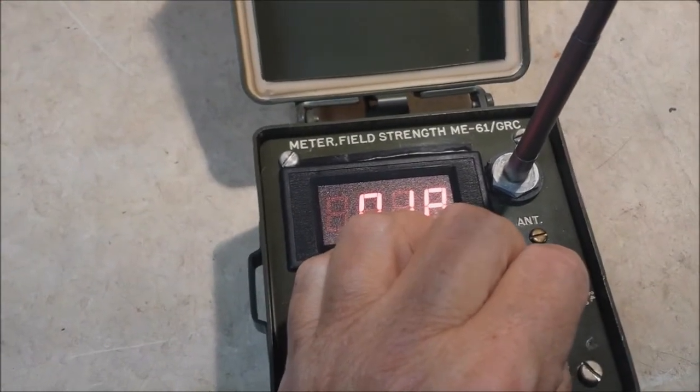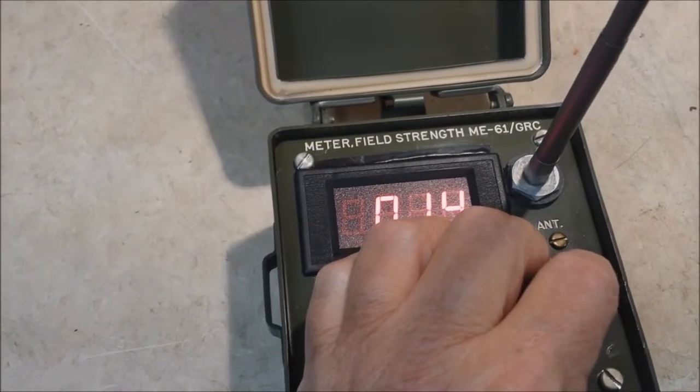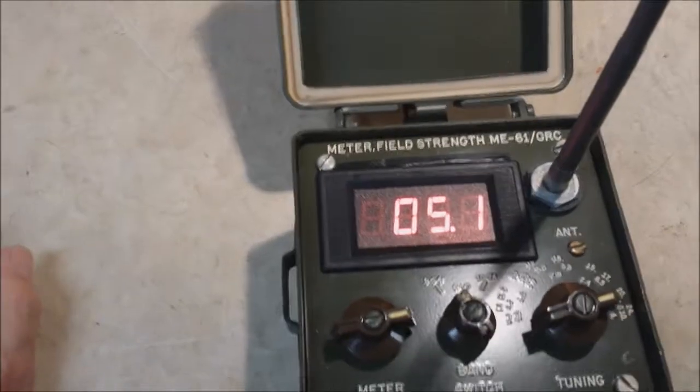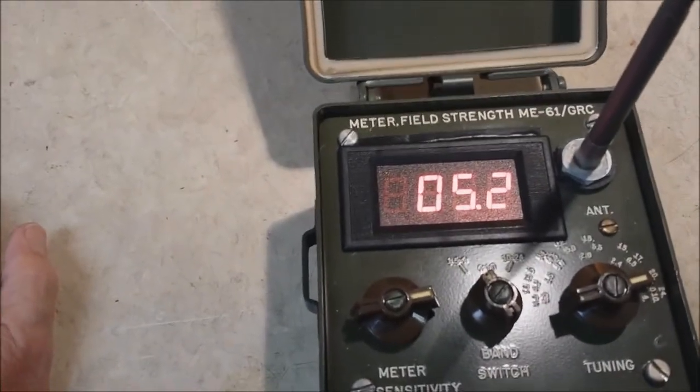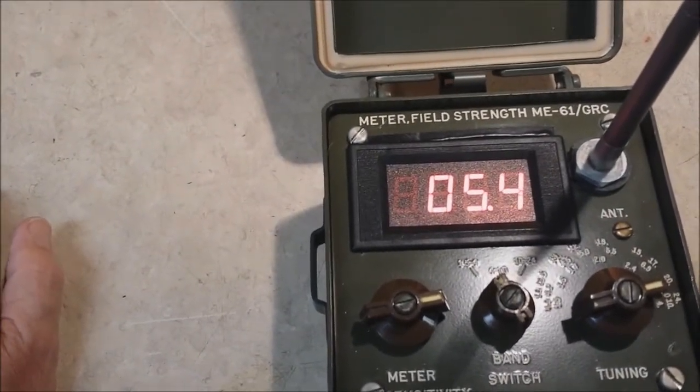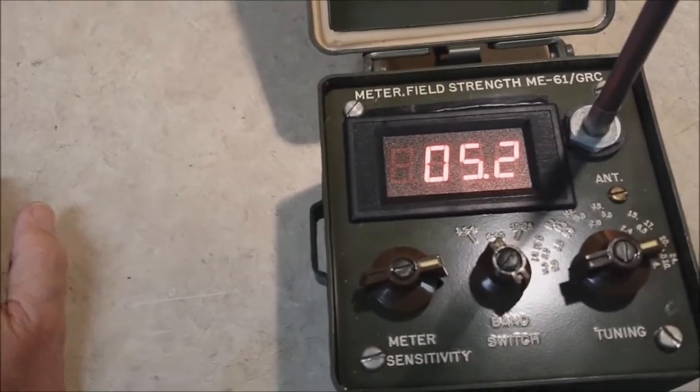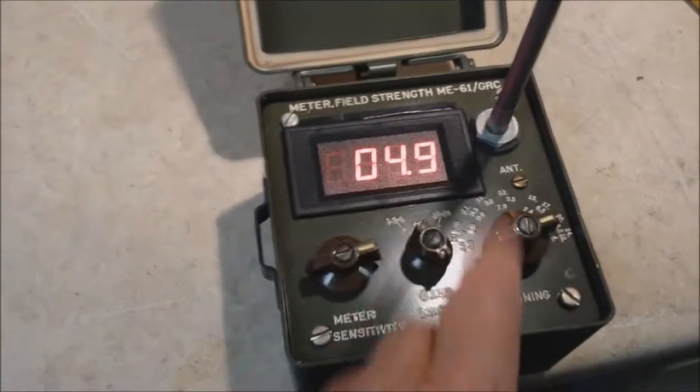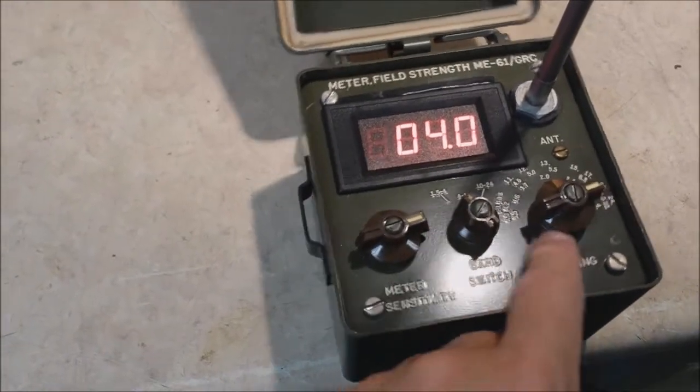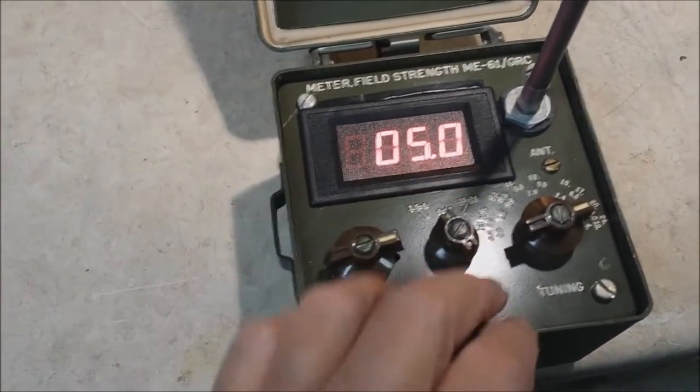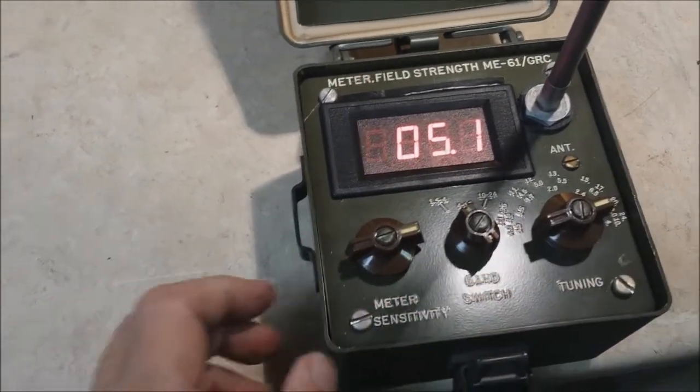And of course it rejects out of band signals. Probably you could get by with just a diode across the input of this and it would probably work, maybe not quite as sensitive. But if you can't find one of these you could do that, or you could try to make your own with the front end tuning here.